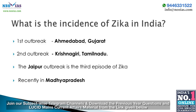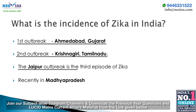Regarding the incidence of Zika in India: the first outbreak was reported in Ahmedabad, Gujarat in 2017. The second outbreak was reported in Krishnagiri, Tamil Nadu. The Jaipur outbreak is the third episode of Zika in India in less than two years. The disease continues to be on the surveillance radar of the Union Ministry, even though it is no longer a public health emergency of international concern according to WHO.